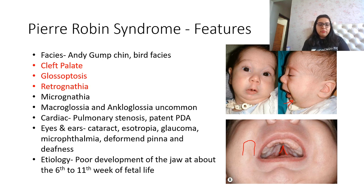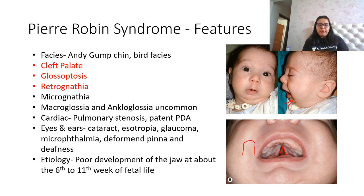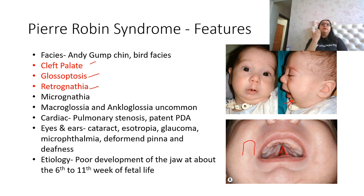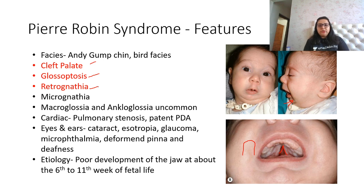The triad of Pierre Robin syndrome consists of three important clinical features: cleft palate, glossoptosis, and retrognathia. Glossoptosis refers to the falling of the tongue to the back side because of poor tone and lack of palatal support. Micrognathia is also seen. Remember that macroglossia and ankyloglossia are uncommon in this syndrome.